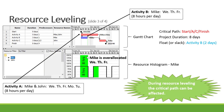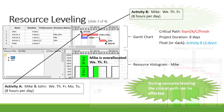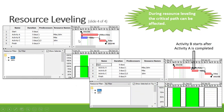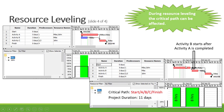It's important that during resource leveling the critical path of the project can be affected. When we apply resource leveling we'll move activity B to start after activity A, and therefore level out the time for the resource. However, our critical path has now changed to start, A, B and C, and therefore our project duration has also changed from eight days to 11 days.